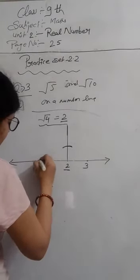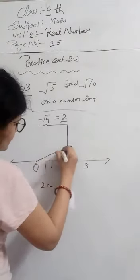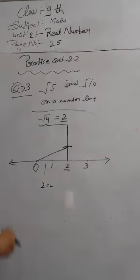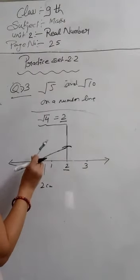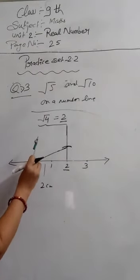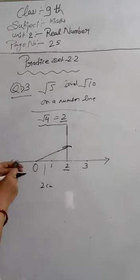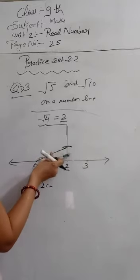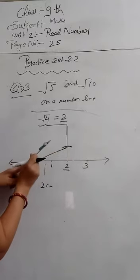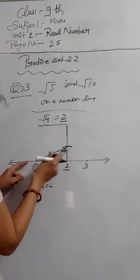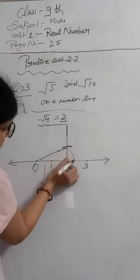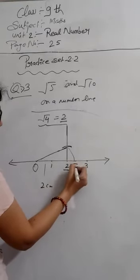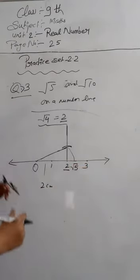We will draw a line from 0 to this point. Then we open our compass, put it on number 0, and draw an arc. This arc marks √5 on the number line.